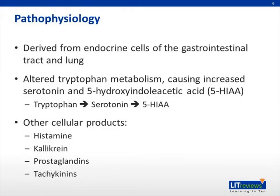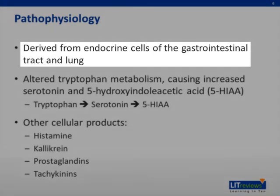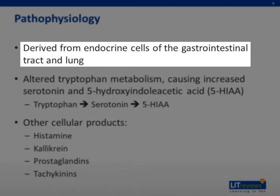When we talk about the tumors, the cell type is important, specifically because of what the tumor can do and the effect that it exerts. Carcinoid tumors are comprised of neuroendocrine cells — endocrine cells that are derivatives of the gastrointestinal tract and the lung. This cellular derivation is important because these cells play an important role in tryptophan metabolism.